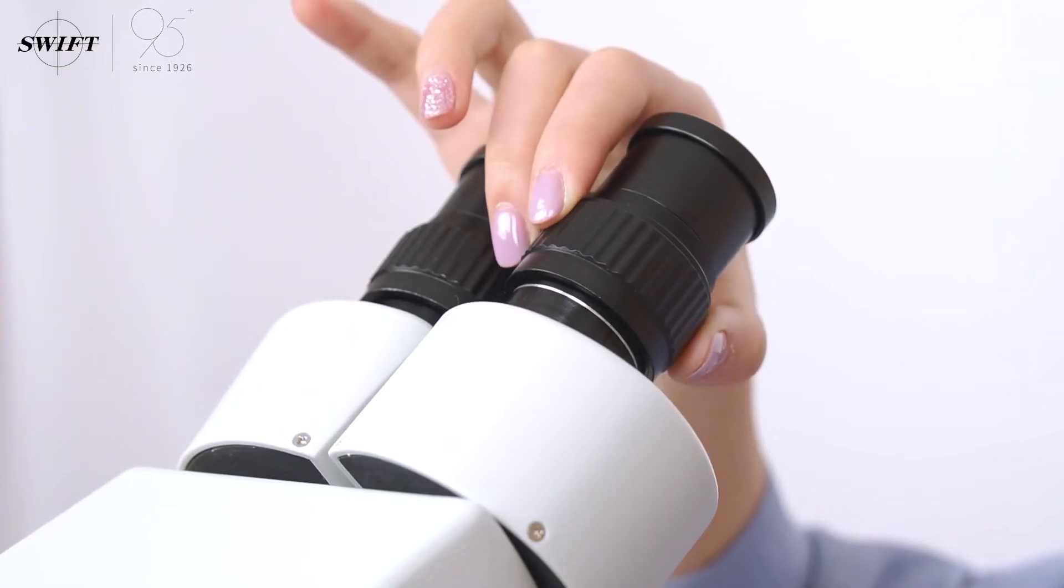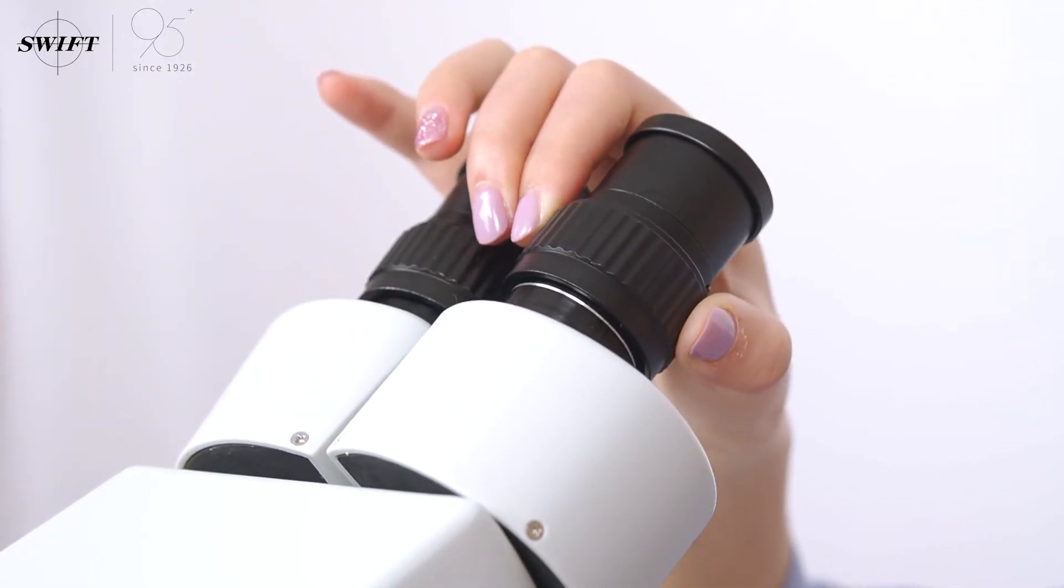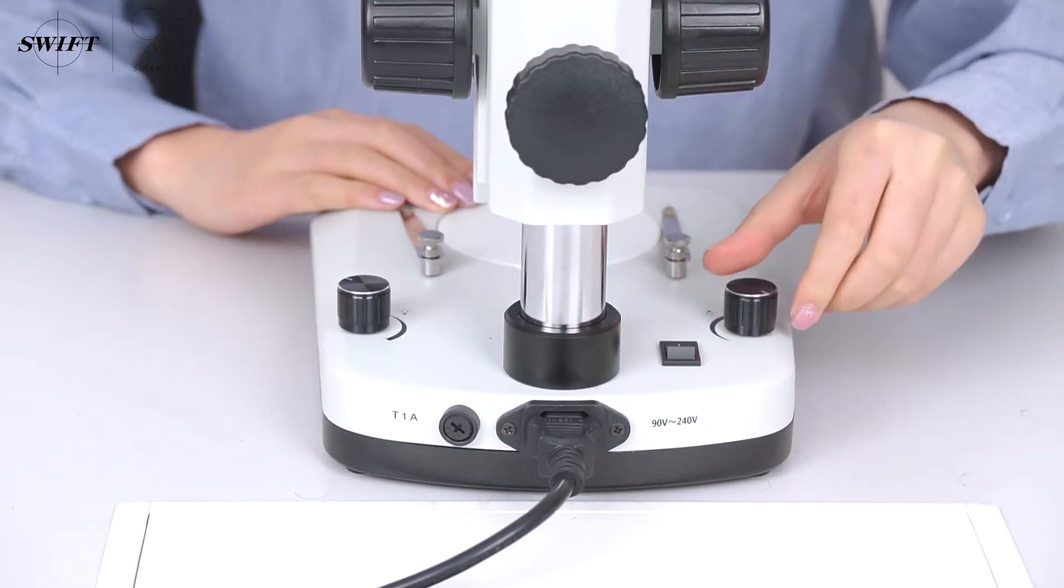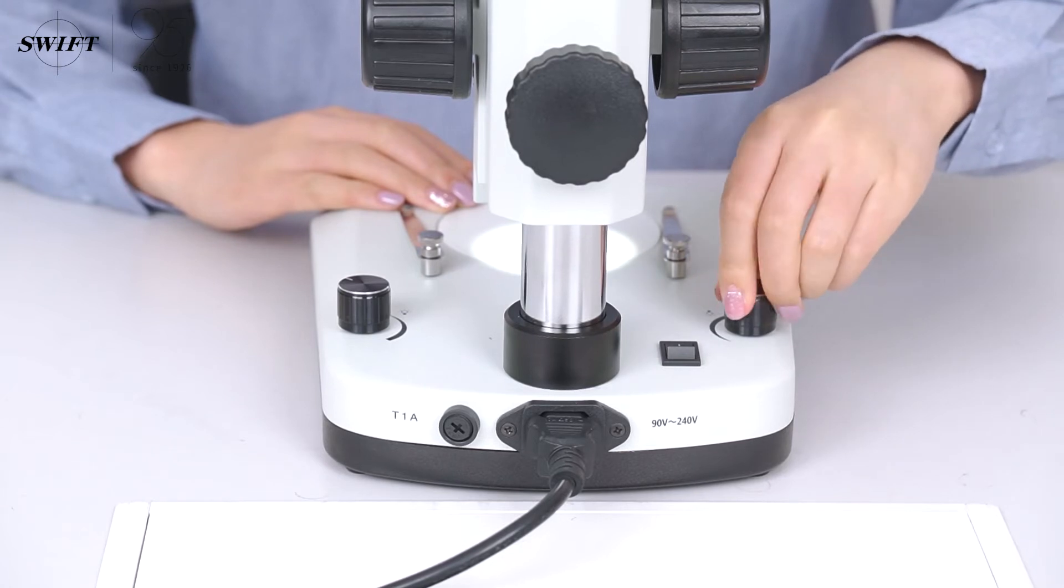When operating the microscope, first adjust the interpupillary distance to the position suitable for your eyes. Place the diopter circle at the starting position marked by the reticle. At this point, you can turn on the power and adjust the light source to a brightness that is comfortable for human eyes.